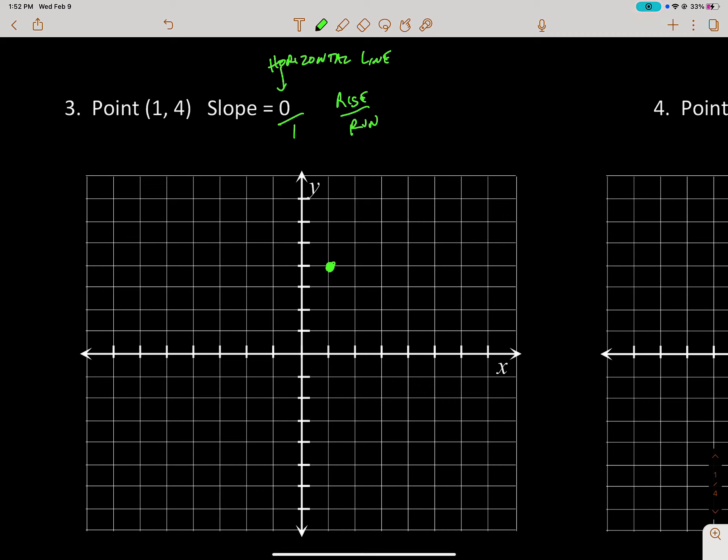this point and I rise up no units—so I don't rise at all—and then I run over one, I would be right there for my second point. We have to label these points, so this first one here was (1, 4) and this other point would be (2, 4).